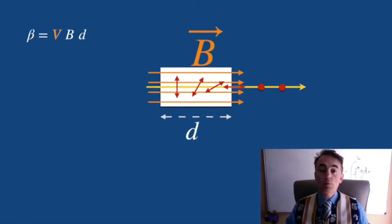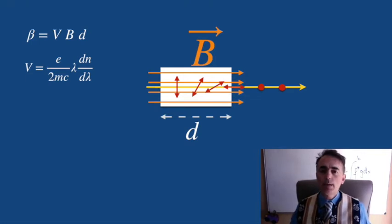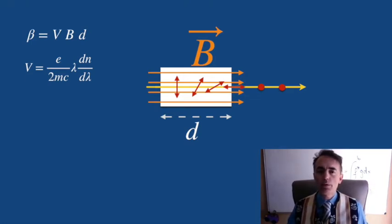This constant actually can be written as e over 2mc times lambda times dn over d lambda, where e is the charge of the electron, m is the mass of the electron, c is the speed of light in vacuum, lambda is the wavelength of light, so it is wavelength dependent, and dn d lambda is the change of the refractive index with the wavelength.